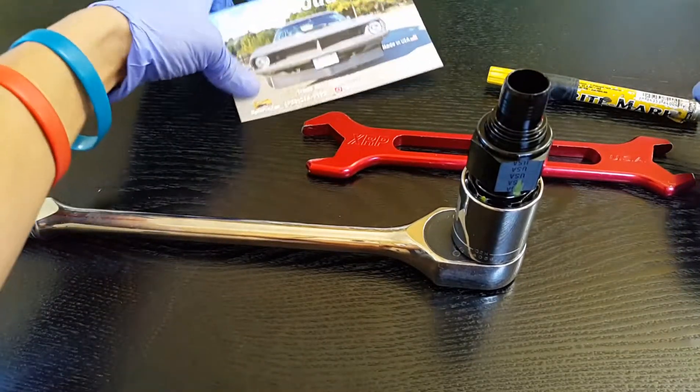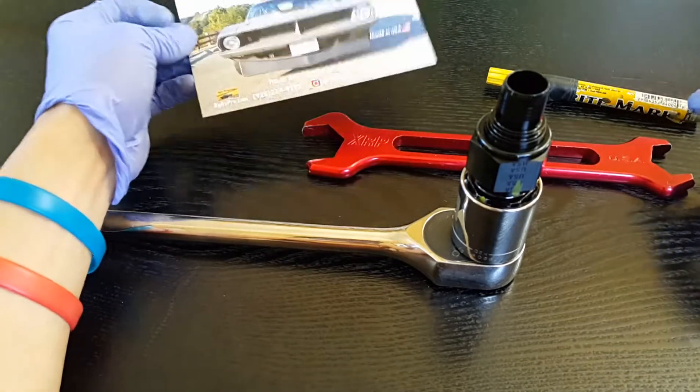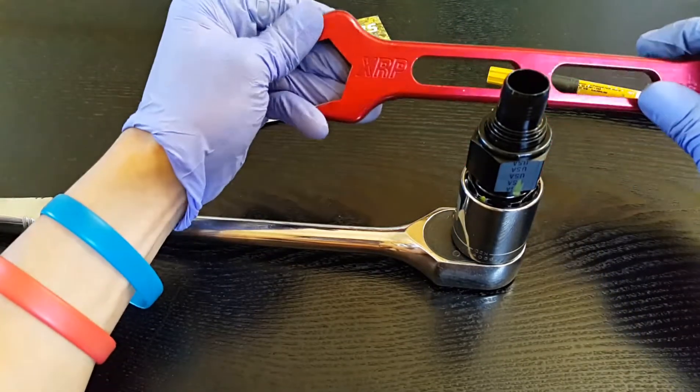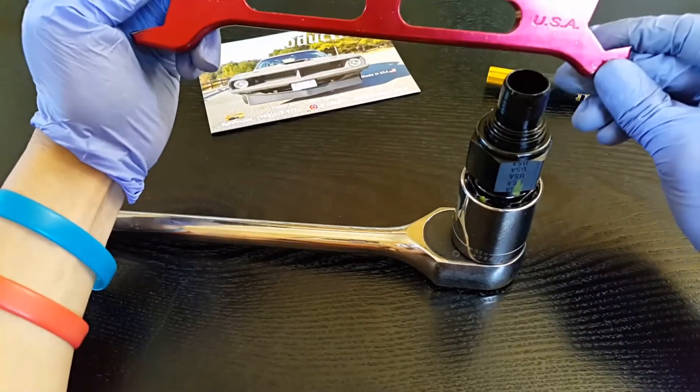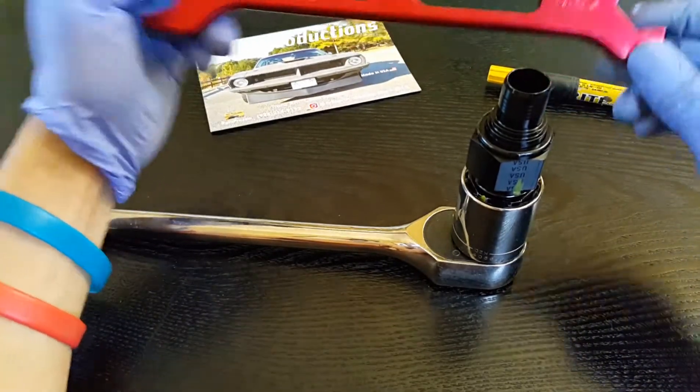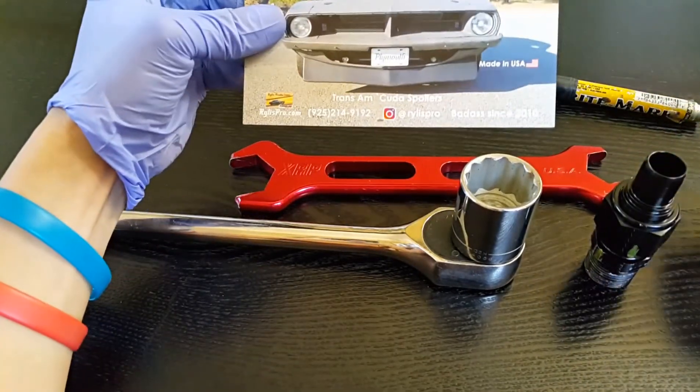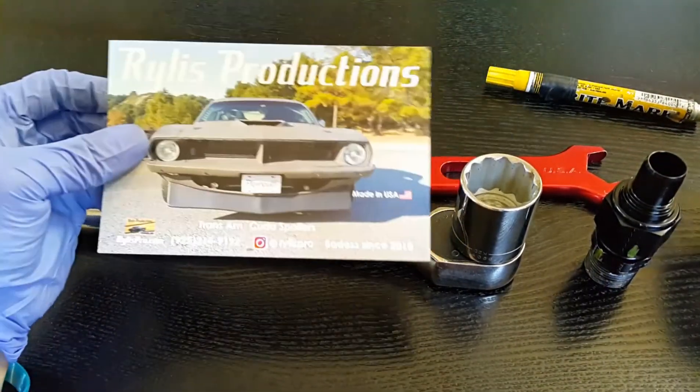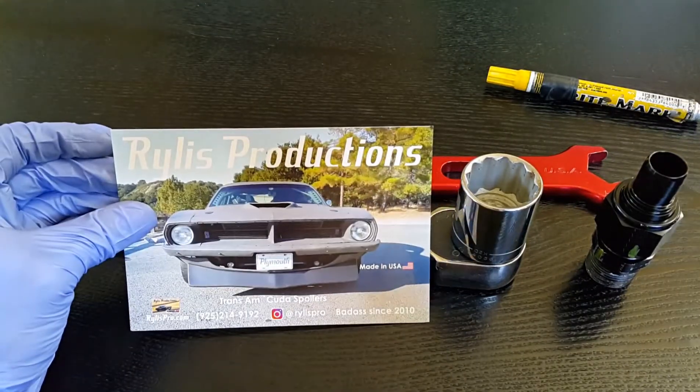All of the products that we sell are what we use on the Cuda. XRP is one of them. Big believer in their stuff. Made in USA. Even their wrenches are made in USA. As you can see there. Hit us up on RylosPro.com or Rylos Productions. See you at the tracks. Have a nice day.